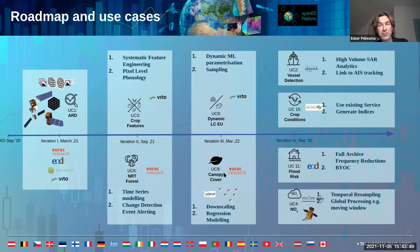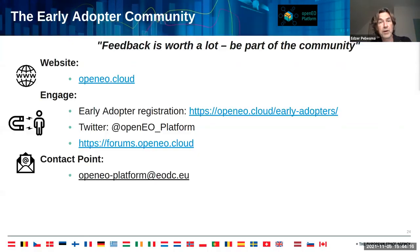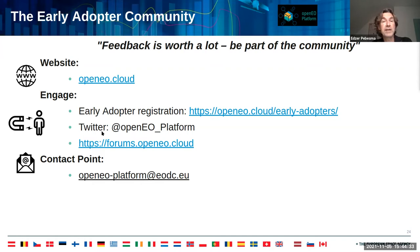The use cases we are going through include: ARD, feature engineering, phenology, time series modeling, event alerting, machine learning parameterization, sampling, downscaling, regression modeling, high-volume SAR, crop conditions, flood risk, and air quality — a very varied set of use cases for the OpenEO Platform project. For early adopters, go to openeo.cloud. We very much look forward to user feedback.